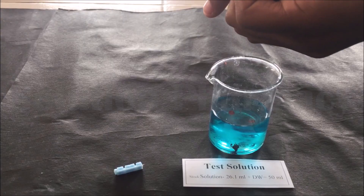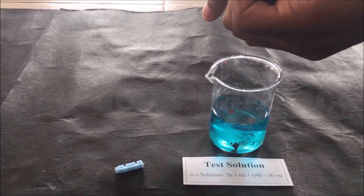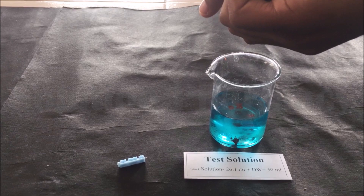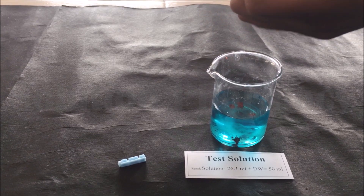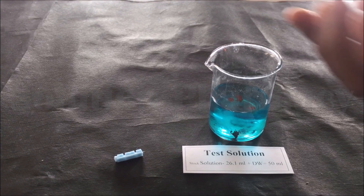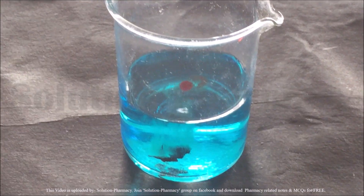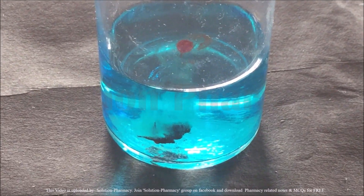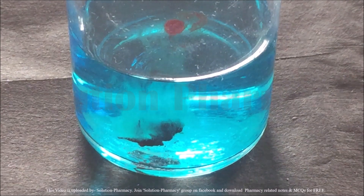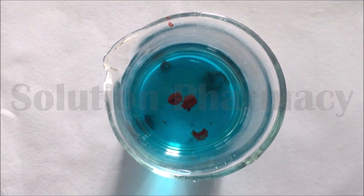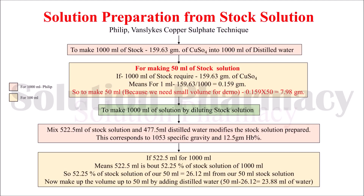In slow motion we are showing the process clearly — you can see how the drop falls into the beaker containing copper sulfate solution, sinks, and settles at the bottom. This clearly indicates that the hemoglobin content of the person is above 12.5 gram. As mentioned, this is only qualitative estimation, not quantitative — we cannot determine the exact hemoglobin content. You can download the principle and calculation in PDF format using the link in the description box. Thank you for watching.